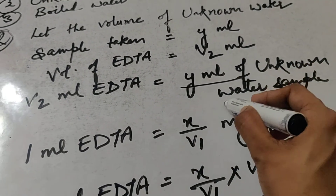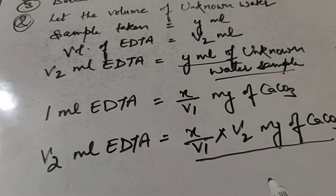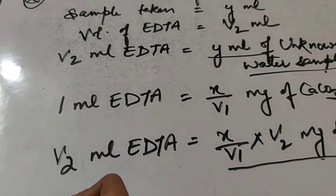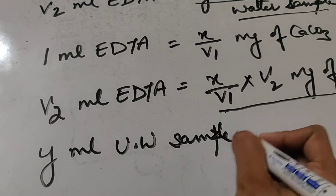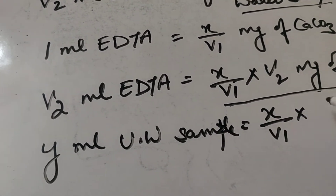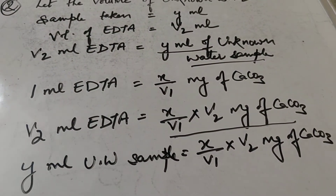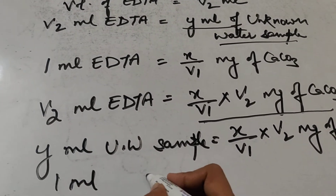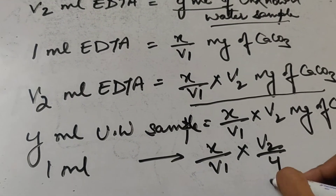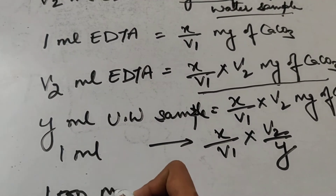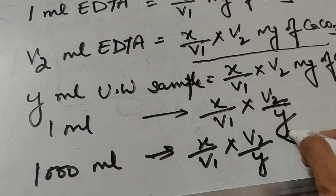We stated that V2 ml EDTA neutralizes Y ml of unknown water. Comparing both statements: Y ml of unknown water sample contains (X × V2)/V1 mg of CaCO₃. Therefore, in 1 ml it will be (X/V1) × (V2/Y) mg of CaCO₃.